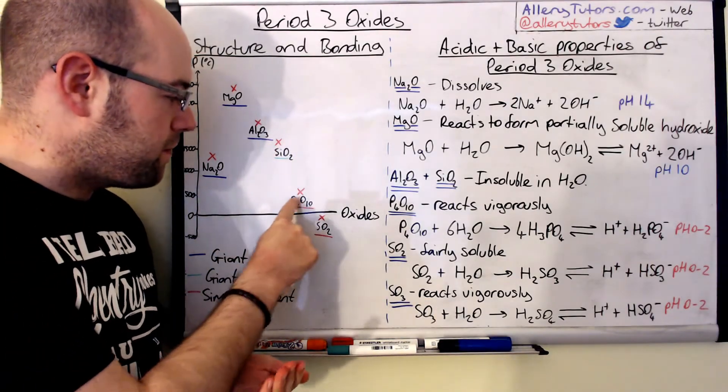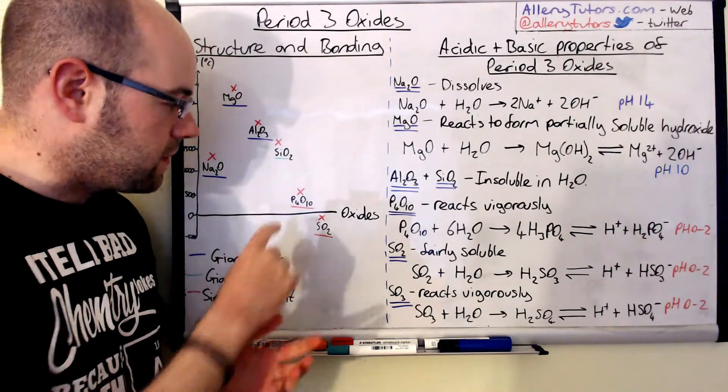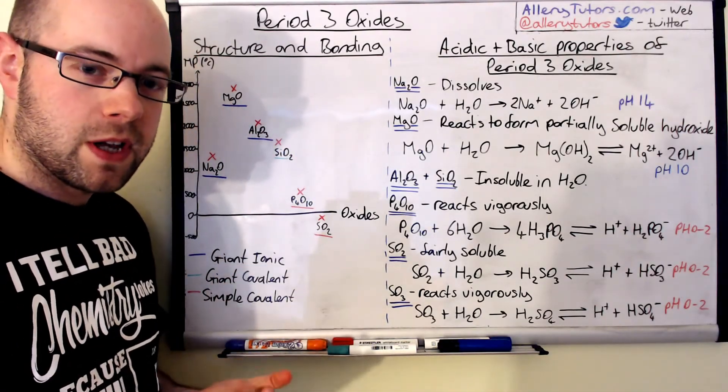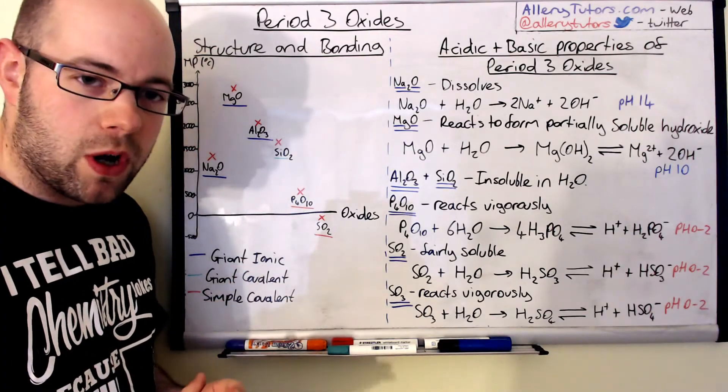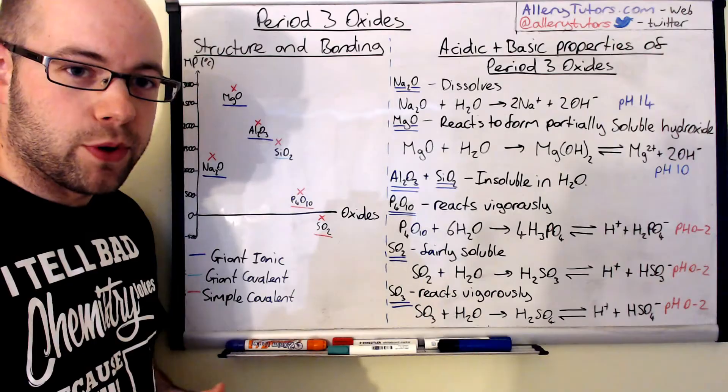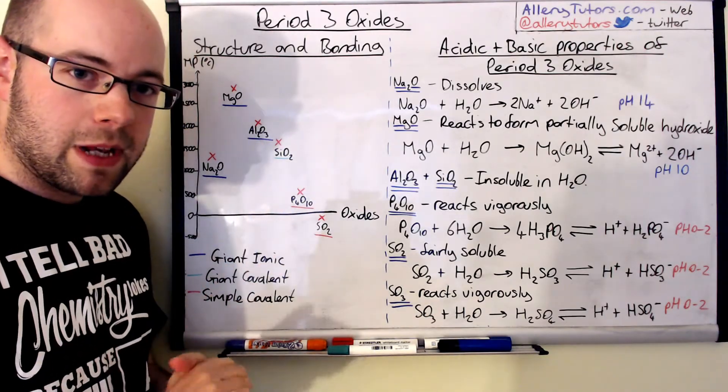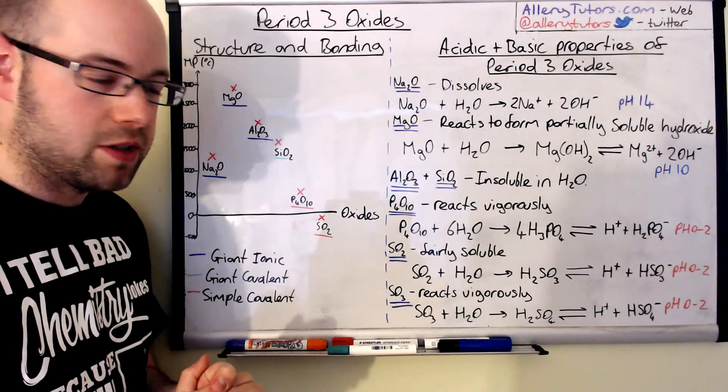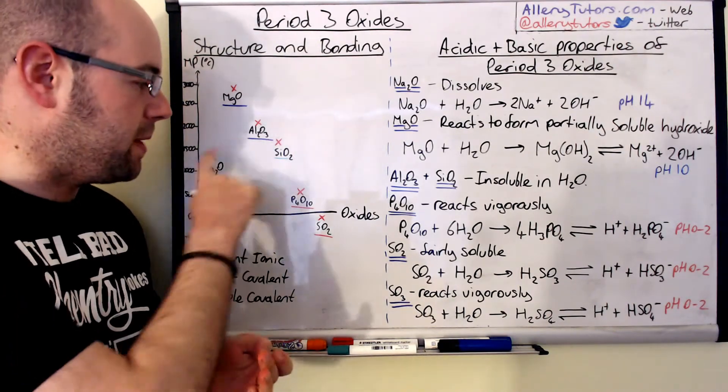If we come down even further we've got big drops here and these are lower than any of the ones that we've had so far. This is phosphorus oxide or phosphorus pentoxide, and phosphorus pentoxide is a simple covalent molecule, very small, doesn't form giant structures, therefore it has weak intermolecular forces between the molecules, and this means that their melting point is dramatically reduced compared to the rest of them.